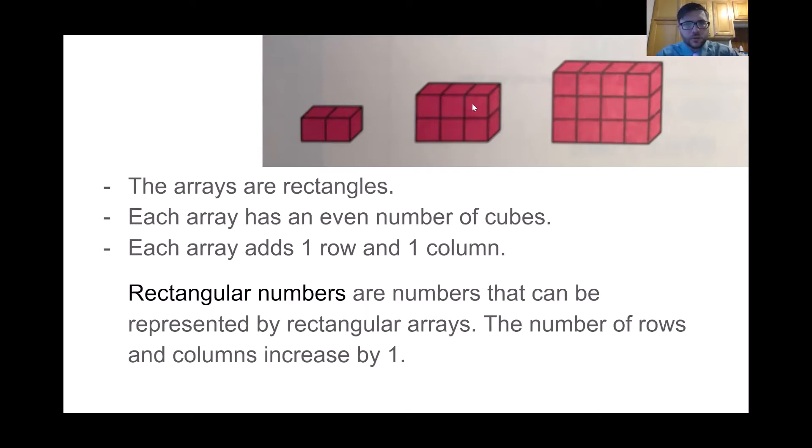1, 2... 1, 2, 3, 4, 5, 6... 1, 2, 3, 4, 5, 6, 7, 8, 9, 10, 11, 12. That's true. They're all even numbers.